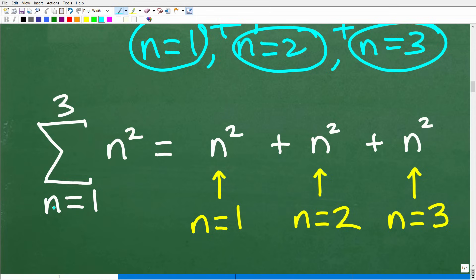So we have n is equal to 1, the summation of n is equal to 1, 2, 3, n squared. So that means that we're going to start at 1. We're going to replace this n with 1, and then we're going to index to n is equal to 2. We're going to plug in for n, that 2.